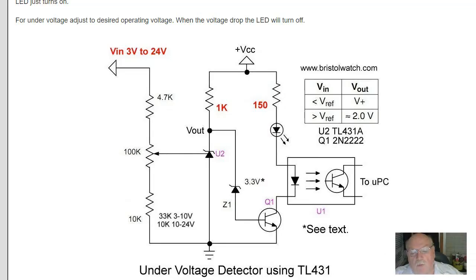While the previous circuits were technically over-voltage detectors, this is a variation you could use for an under-voltage detector. So, how does it work? The resistor network and U2 work the same as before.